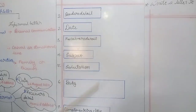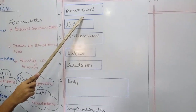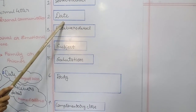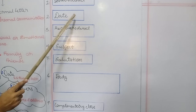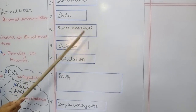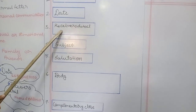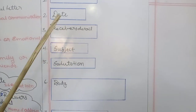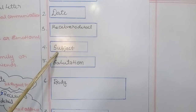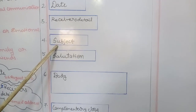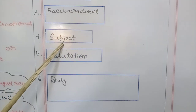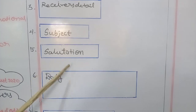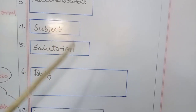Once again I would like to repeat. Sender's detail means the name and address of the person who is writing the letter. Second, date — always write the date like '26th August 2020' with the month's name. After that, receiver's detail — the name and address of the person to whom we are writing the letter. After that, subject — what the letter is about, always four to five words. Then salutation: 'Respected' or 'Dear Sir or Madam.'